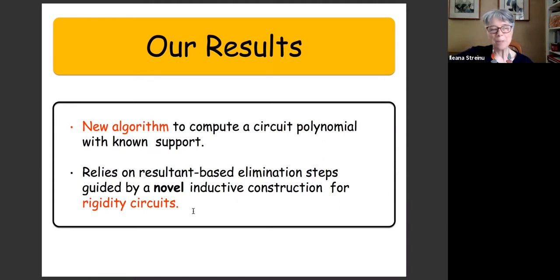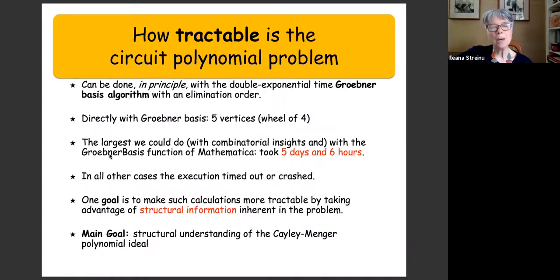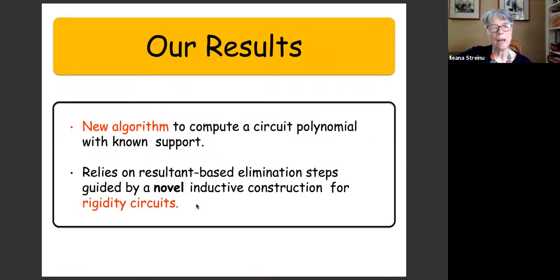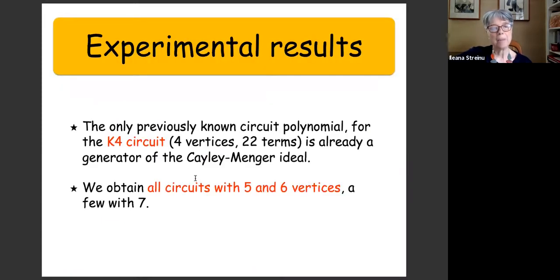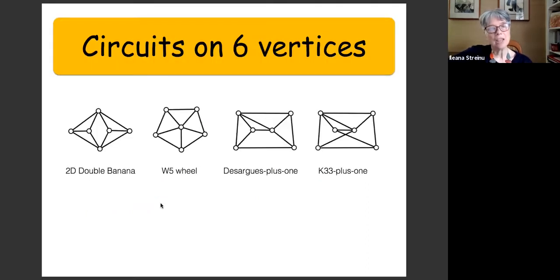Let me brag a little. Pure algebra: five days and six hours. Combinatorics guided resultants give us much, much less — I'll reveal in a moment. The previously known circuit polynomial was only K4. We now obtain all of them with five, six vertices, and a few with seven. These are the circuit graphs on six vertices up to isomorphism: K3,3 plus an extra edge, the Desargues graph, a wheel, and the so-called double banana. The one that took five days and six hours, our method solved in less than 15 seconds.